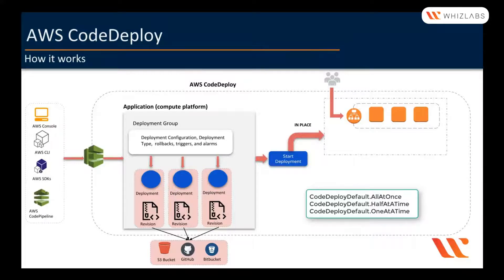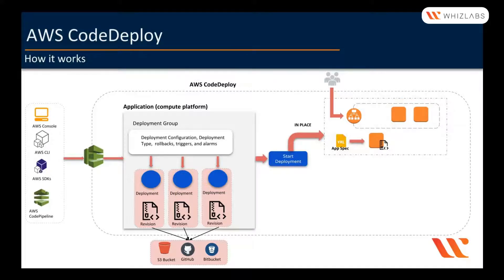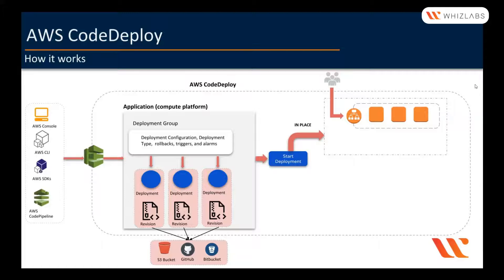Based on this configuration — let's assume we have chosen one at a time — CodeDeploy will drain the instance from the load balancer, deploy the revision, and perform the hooks based on the AppSpec YAML file. During the time CodeDeploy is performing the deployment, requests will only be sent to the healthy instances on the load balancer. Once done, the instance will be added back to the load balancer and the process starts with the next one. If the deployment configuration is all at once, CodeDeploy will drain all instances from the load balancer, and your customers cannot access the application until the deployment is complete.